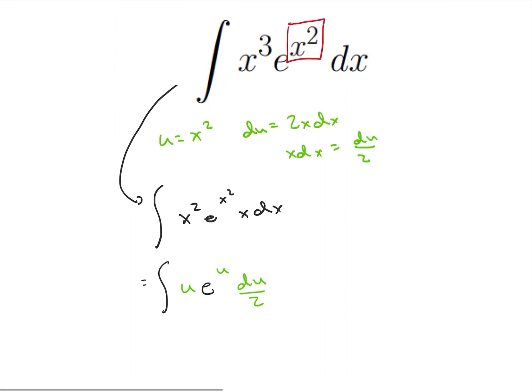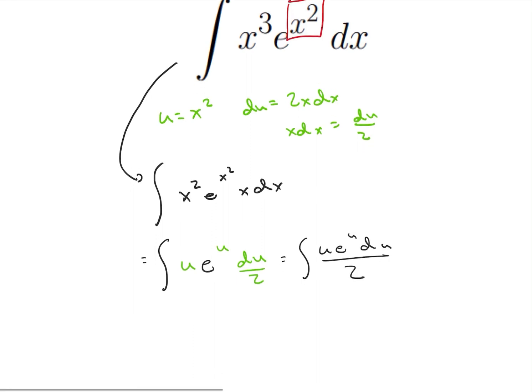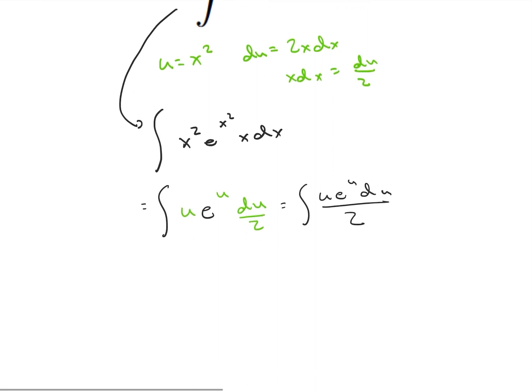And I think at this point, everybody, if you were confused at first, hopefully you're feeling pretty good now. So I'm going to rewrite that as u e to the u du over 2. So how can we integrate that? Well, let's just use integration by parts real quick.